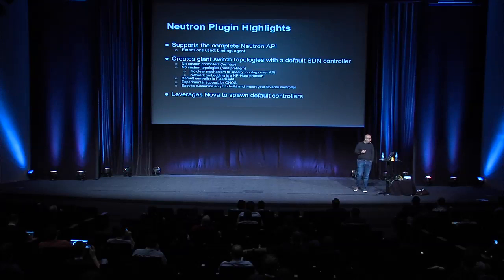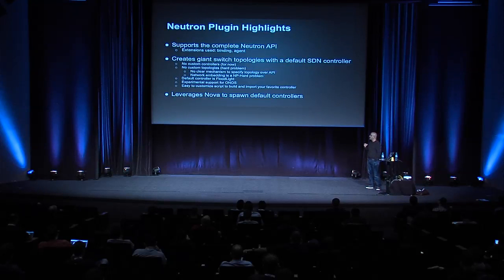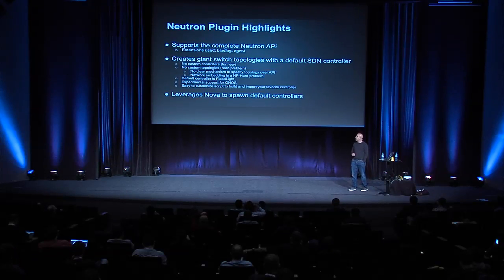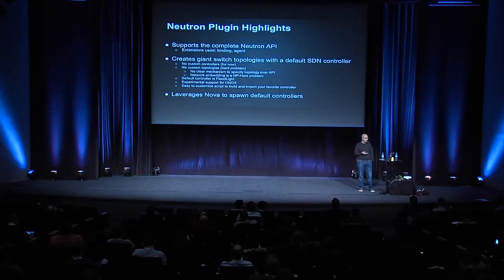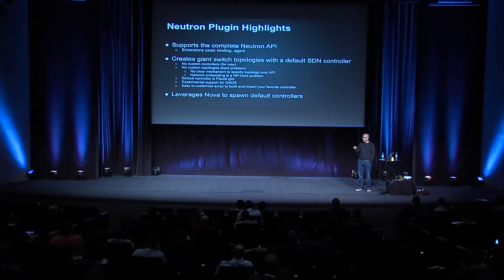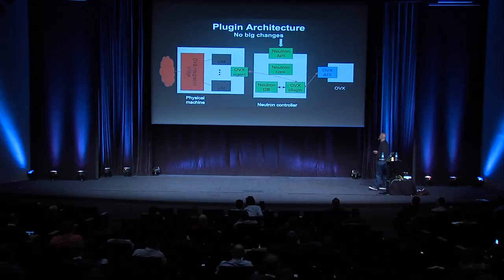We support the complete Neutron API. In the context of OpenStack, we currently only spawn giant switch topologies and connect them to a default controller. Adding custom controllers won't be a big deal — it's very easy, but we haven't had the need so far. Support for custom topology will be harder, simply because we need to extend the Neutron API with a topology API, and network embedding is an NP-hard problem. The cool thing is we leverage Nova to spawn our default controller VMs — it's a nice bootstrapping method.